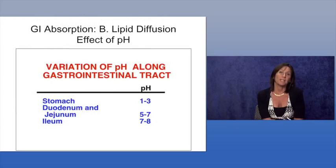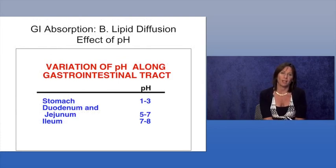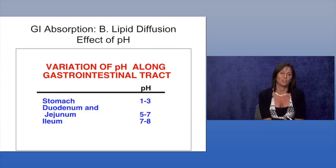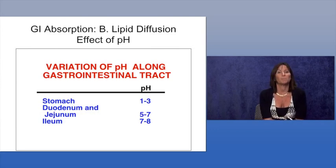To illustrate the degree of pH variation along the GI tract: in the stomach the average pH is 1 to 3; in the duodenum and jejunum it is 5 to 7; and in the ileum it is even more basic, with an average pH of 7 to 8.